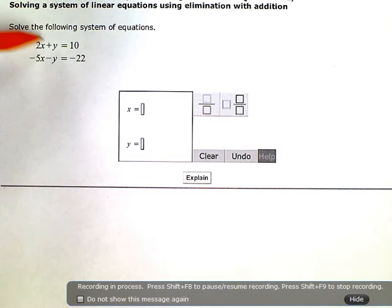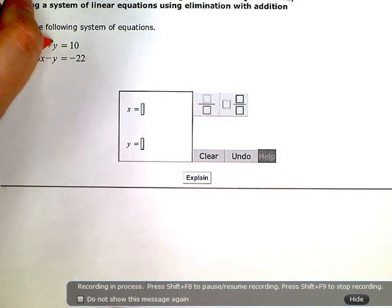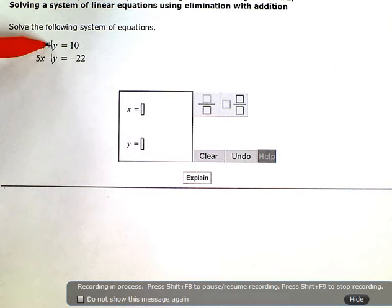So if I look here at my y's, my y's already have that situation set up for me. This is plus one y, we kind of have the implied coefficient of one there, and negative one y here.